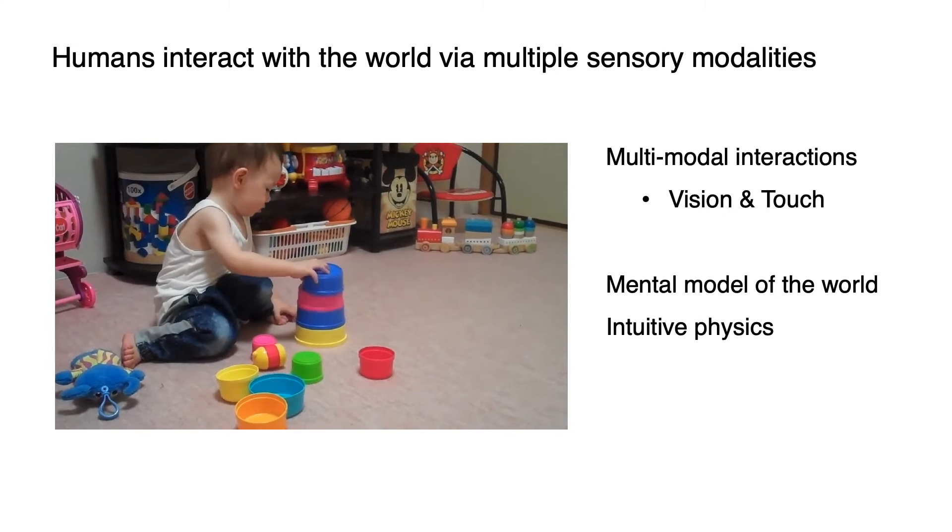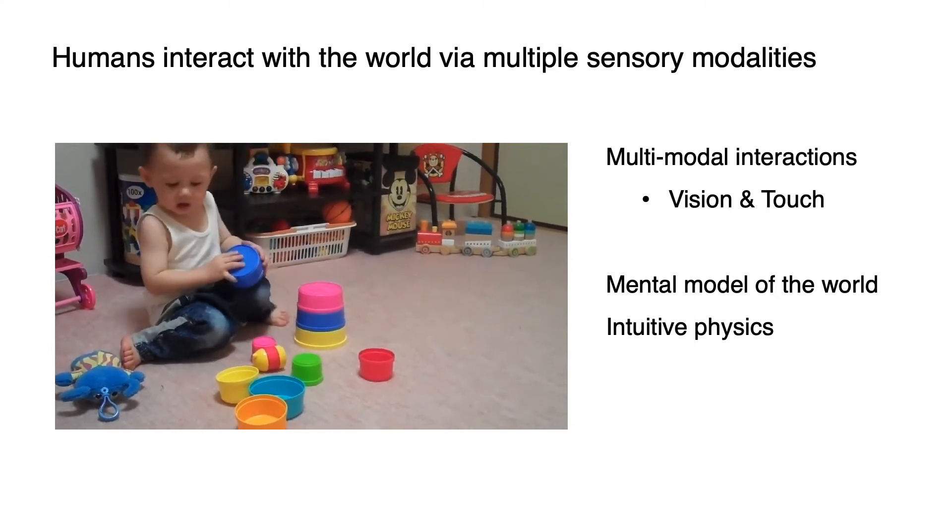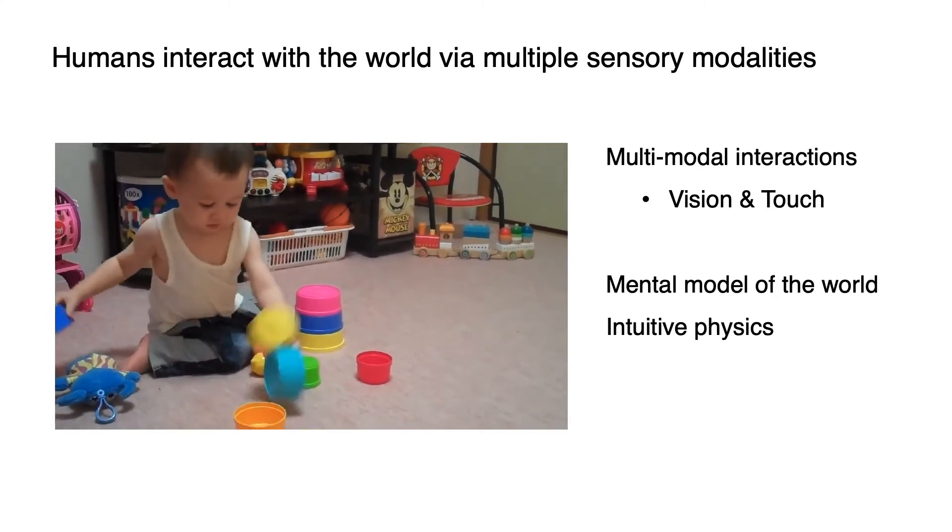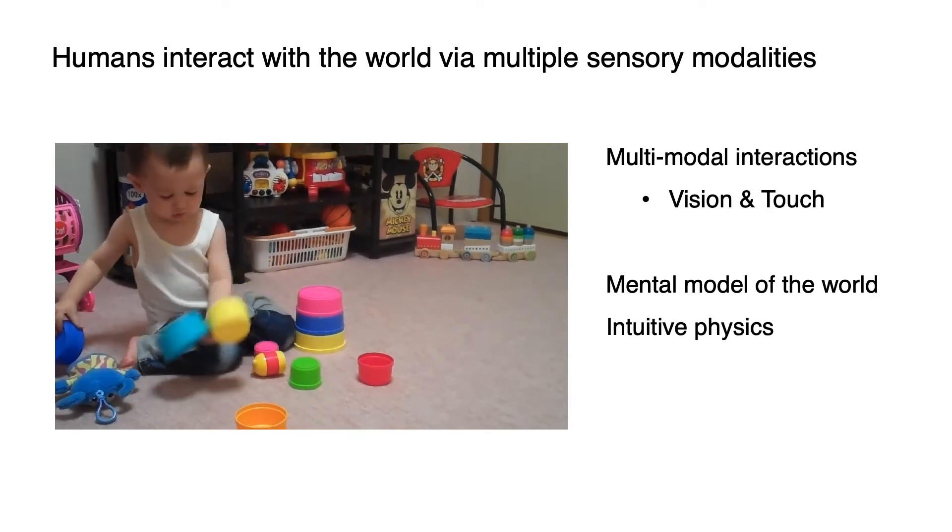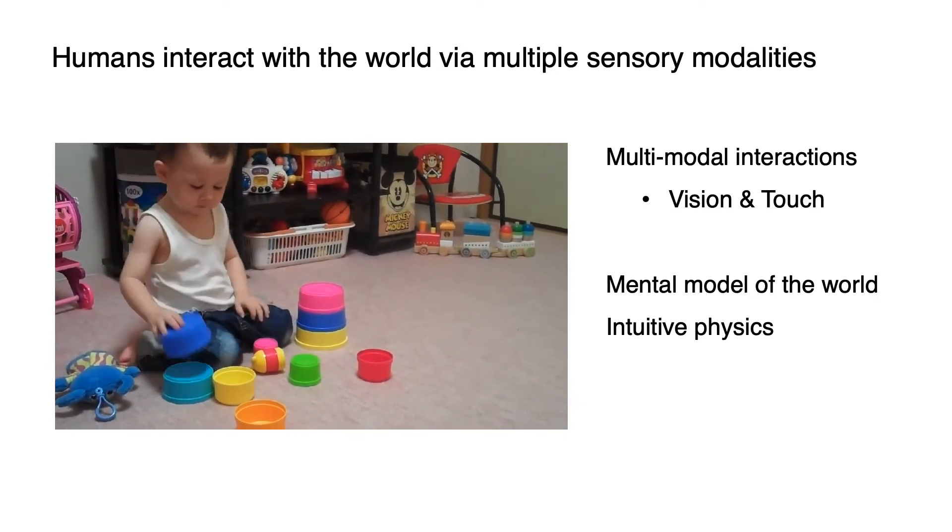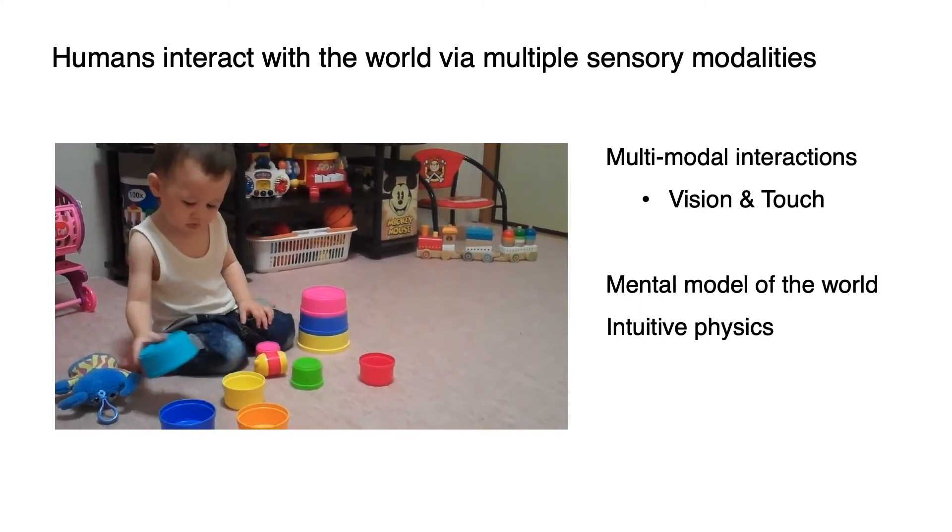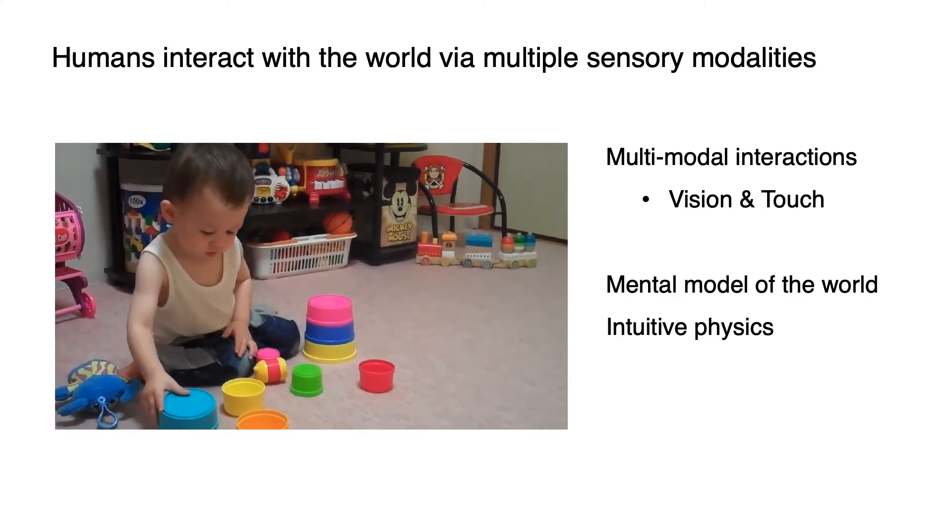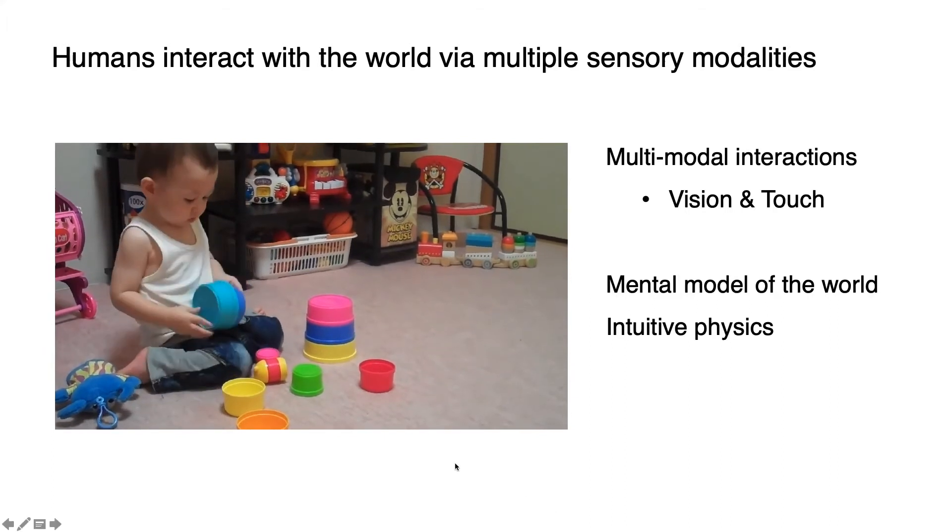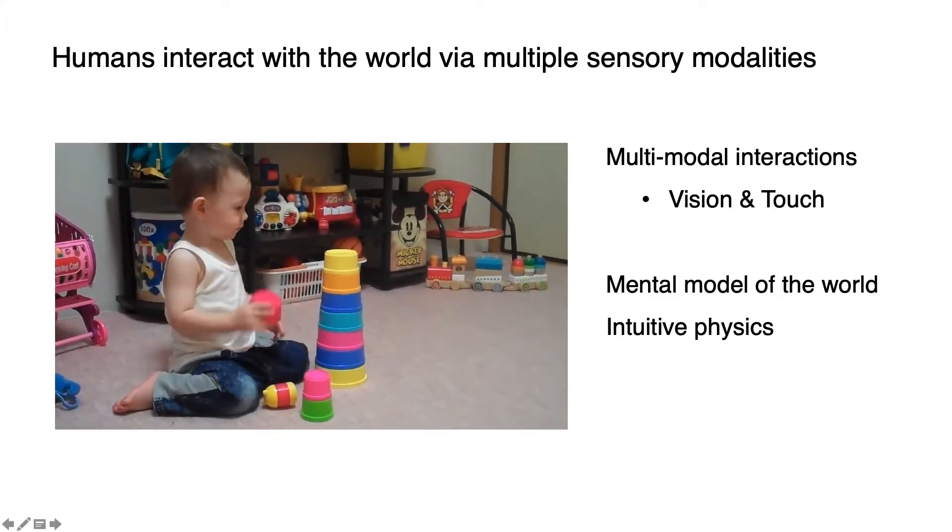Like what you can see from the video, the baby understands the physical interactions between the objects and can predict whether the tower will be stable or not after placing the cylinders one on top of another. And this intuitive understanding of physics allows the baby to make a stable tower at the end of this video.